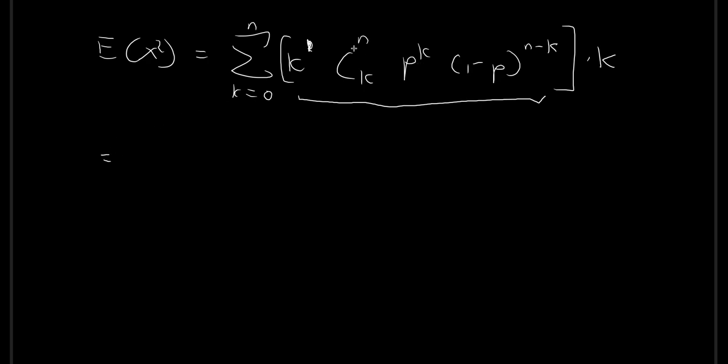And then recall from the last video, what we did was we shifted down everything by one step. So k in the summation, we shifted everything down by one step and then we arrived at an alternative expression that was easy to evaluate.